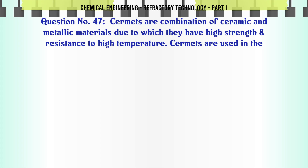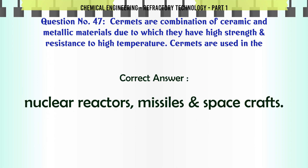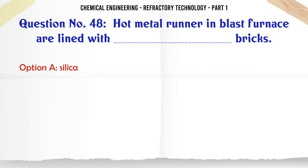Cermets are combinations of ceramic and metallic materials, due to which they have high strength and resistance to high temperature. Cermets are used in: A. Hearth of the blast furnace, B. Nuclear reactors, missiles and spacecrafts, C. Insulation of high temperature furnaces, D. Roof of electric furnaces. The correct answer is Nuclear reactors, missiles and spacecrafts.